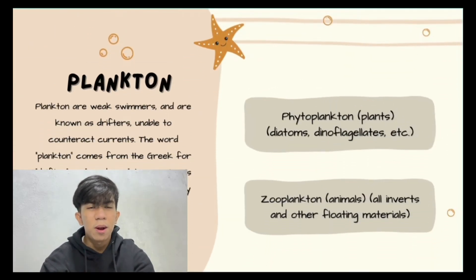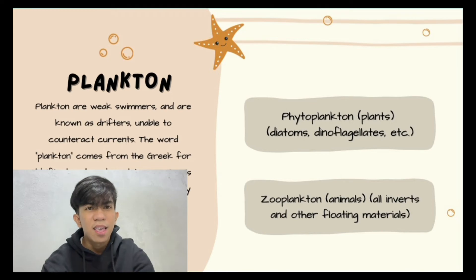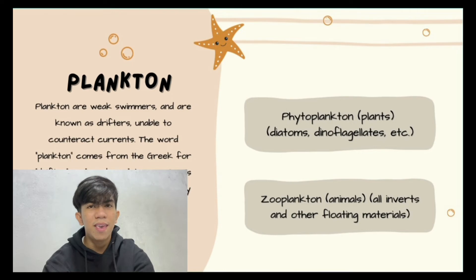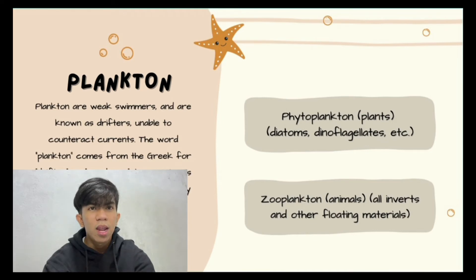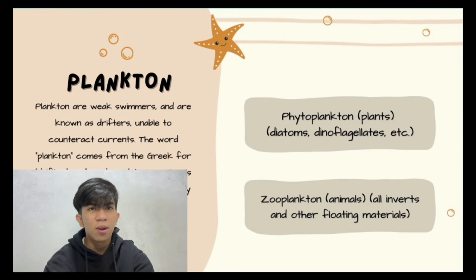The first group are plankton. Plankton are living things that float in the water. Most plankton are too small to see with the unaided eye, and they are unable to move on their own, so ocean motions carry them along. There are two main types of plankton. The first is phytoplankton, or plant-like plankton — they make food by photosynthesis, live in the photic zone, and most of them are algae. The second is zooplankton, or animal-like plankton — they feed on phytoplankton and include tiny animals and fish larvae.